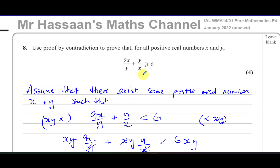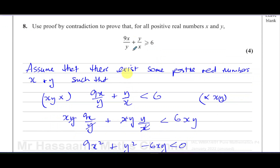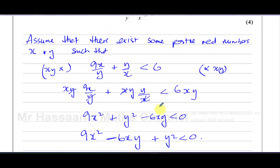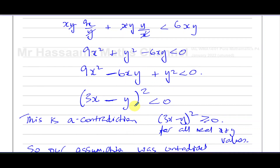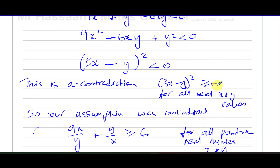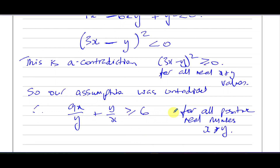To summarise: you start by assuming what contradicts the original statement — that the expression is less than 6 for some positive x and y. You manipulate it algebraically, spot the perfect square (3x - y)², and show that according to our assumption it must be less than zero. But we know a squared term can never be less than zero. That's the contradiction, so the original statement is proven true for all positive real x and y.